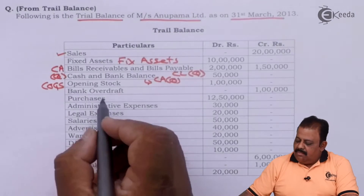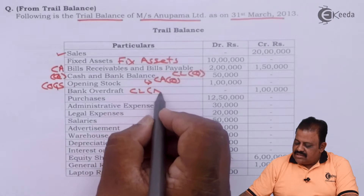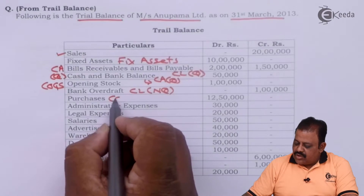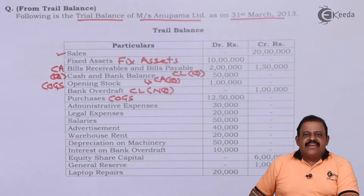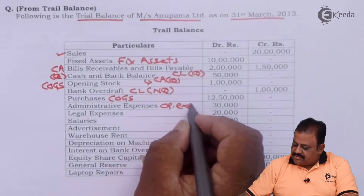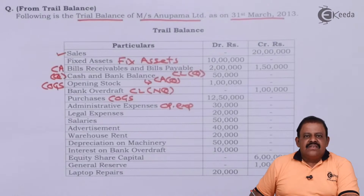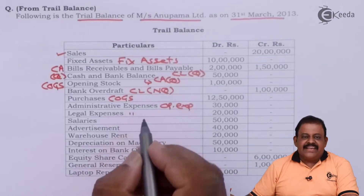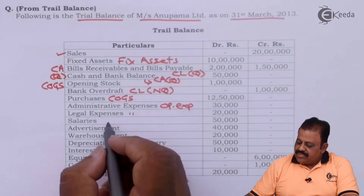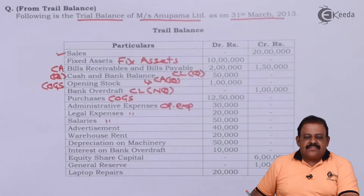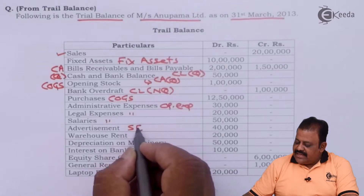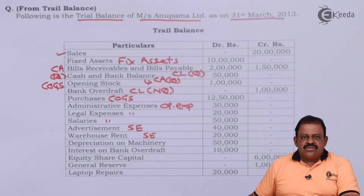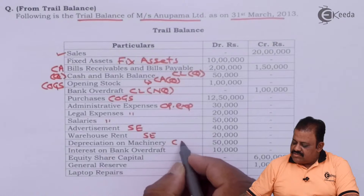Opening stock will be an item of cost of goods sold in the income statement. Bank overdraft is a current liability but a non-quick current liability — it's part of the balance sheet. Purchases fall under cost of goods sold. Administrative expenses and legal expenses are operating expenses under administration. Salaries are also administrative expenses.